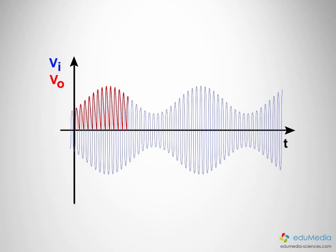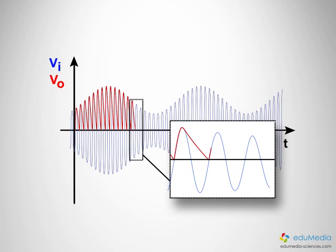If the time constant RC is too small, the decline is too rapid and the red curve has the time to vary between two consecutive peaks of the blue curve.